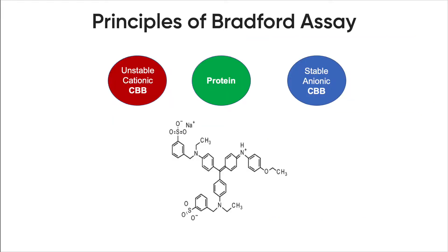The dye exists in three forms: the cationic form, which is red; the neutral form, which is green; and the anionic form, which is blue. Under acidic conditions, the dye is predominantly in the doubly protonated red cationic form, and it gives absorbance at 417 nm.